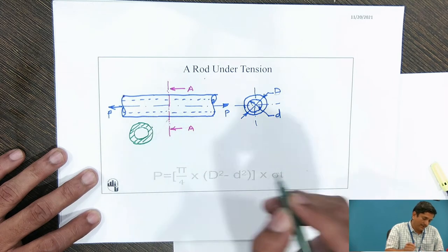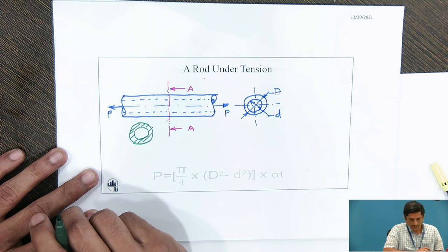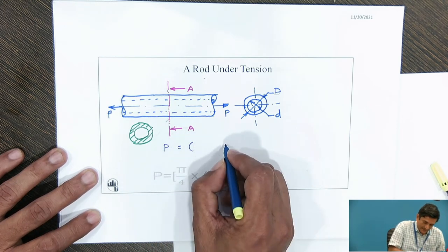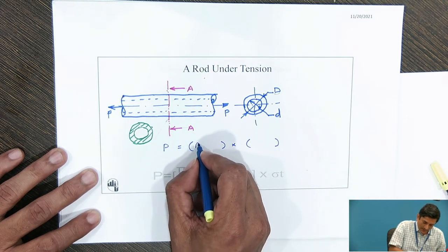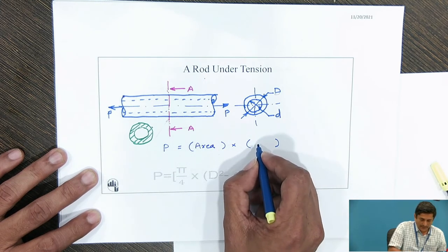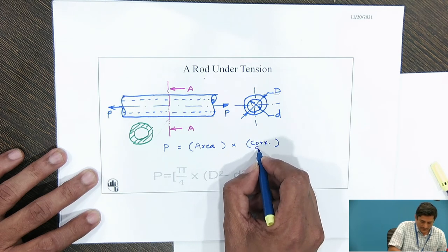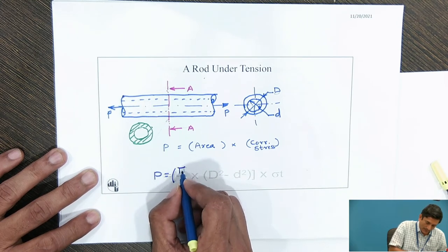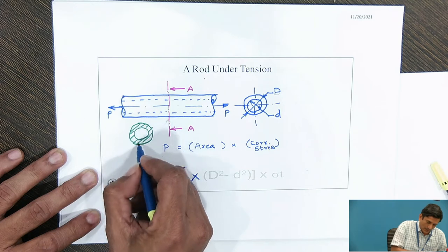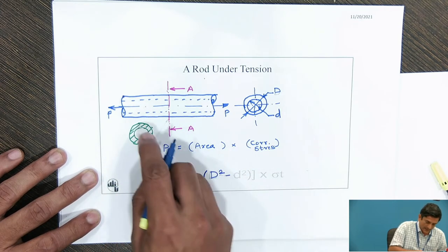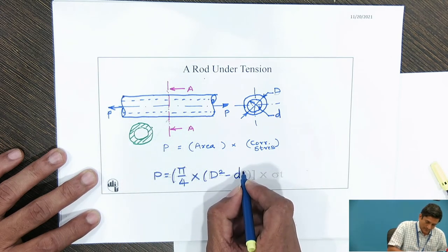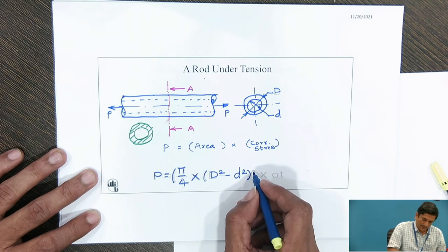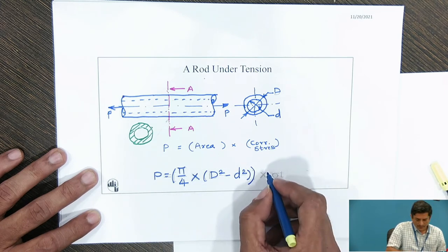The area of cross section at this plane is the area resisting the failure. Outer circle diameter is D and inner circle diameter is d. As per our rule, the equation is: P = (pi/4 × D² − pi/4 × d²) × sigma t. The first term is the outer circle area and we subtract the inner circle area pi/4 × d² because there is no material there. This is the total area available.